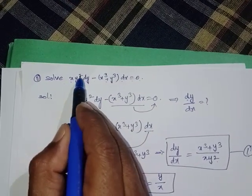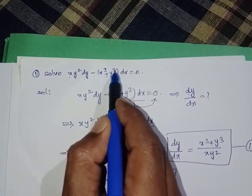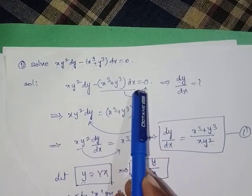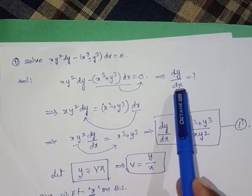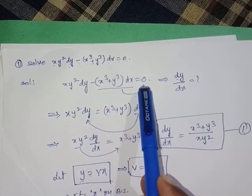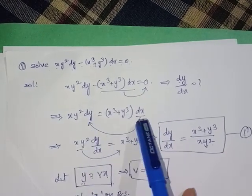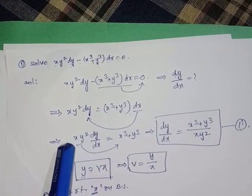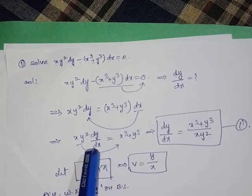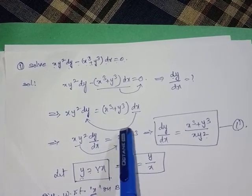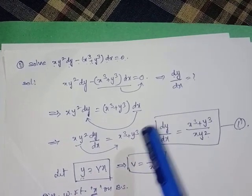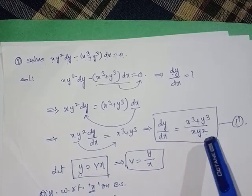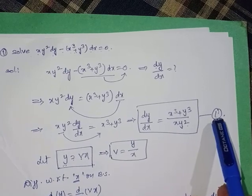Recap: Solve x·y²dy - (x³ + y³)dx = 0. Write down the given data and convert to dy/dx form. Transferring the negative value and the remaining terms gives dy/dx = (x³ + y³) / (x·y²). Consider this the equation to work with.